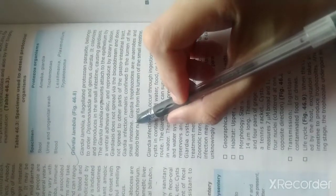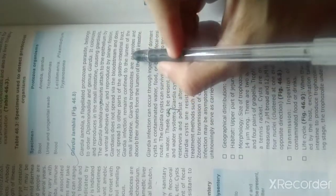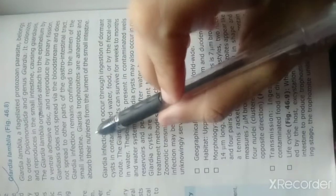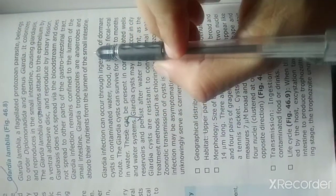Giardia infection remains confined to the lumen of the small intestine. Giardia trophozoites are anaerobic and absorb their nutrients from the lumen of the small intestine.